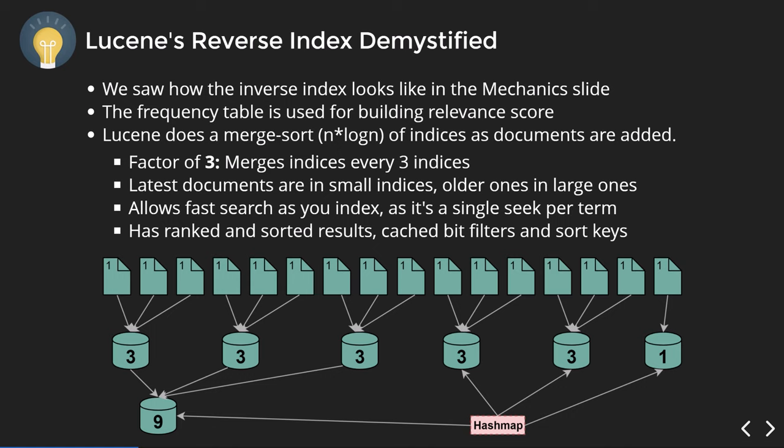Since it merge-sorts every three indices, you end up with larger older indices and smaller newer ones. Looking at the chart, three individual indices get merged into one, then the next three, and once you have those three mid-sized indices they get merged into one larger. The end result is very large old indices and very small recent indices. This is very useful for time series data — recent events are fast to find due to small indices, while older data takes longer. All indices are findable in a single seek without multiple iterations, and results are ranked, sorted, and cached.